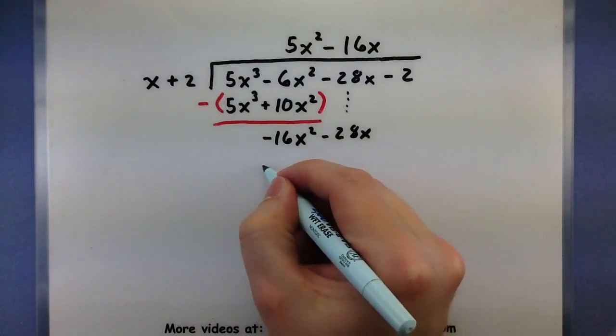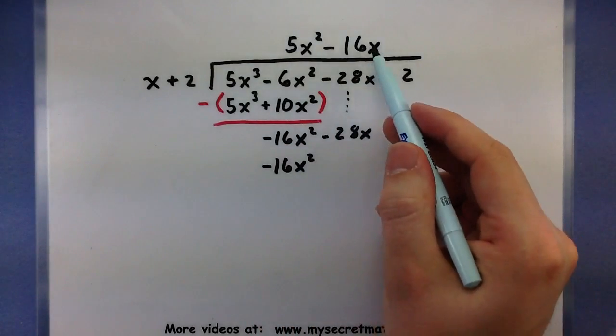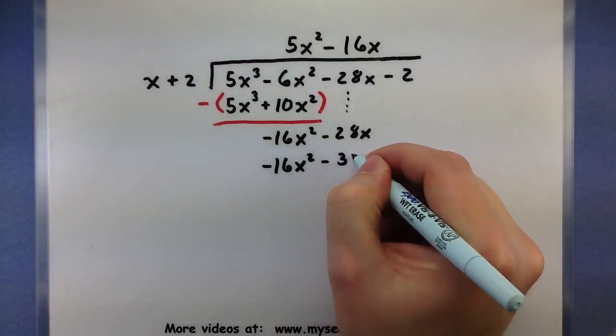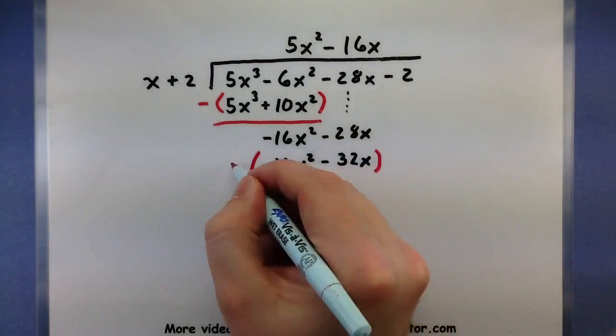So -16x times x, -16x². -16x times 2, -32x. Looking good. And of course, now, let's subtract that away.